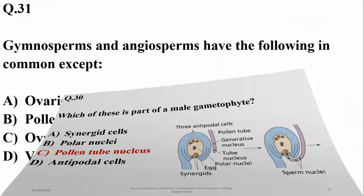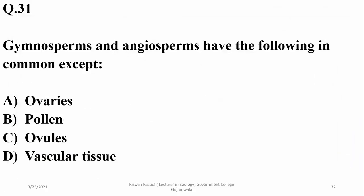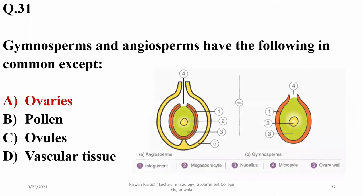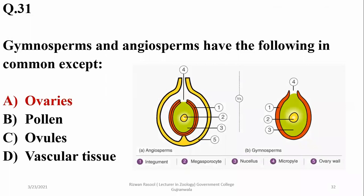Last question: gymnosperms and angiosperms have pollen, ovules, and vascular tissue in common, but ovaries are formed in angiosperms only. So the right option is alpha.